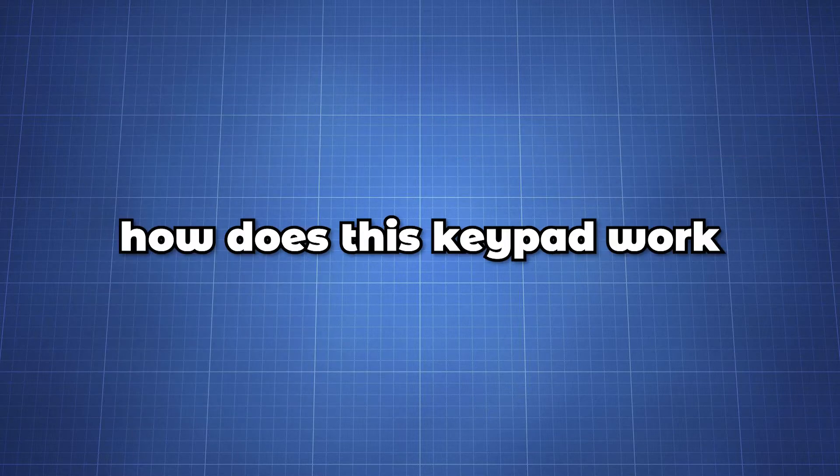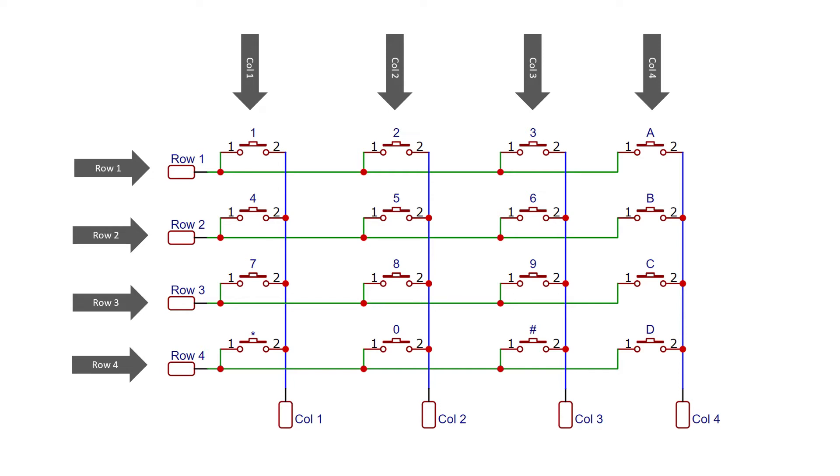Let's take a look at how does this keypad work. The schematic for the arrangements is shown here. This 4x4 matrix keypad has 16 built-in push button contacts connected to the rows and columns. Using the Pico we can scan these lines for a press state. We can set all the column lines to input and all the rows lines to output.